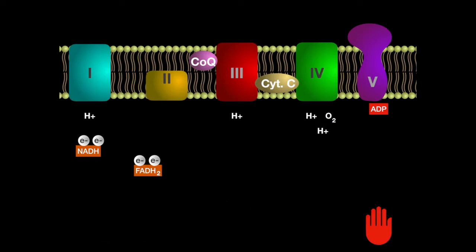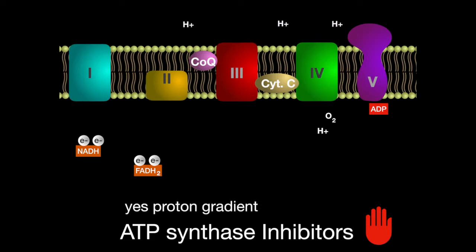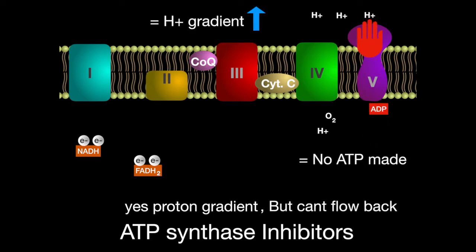ATP synthase inhibitors don't stop the production of the proton gradient, but don't allow the protons to flow back through the synthase to create ATP. Thus, the proton gradient will increase and no ATP will be created. The antibiotic oligomycin acts through this mechanism.